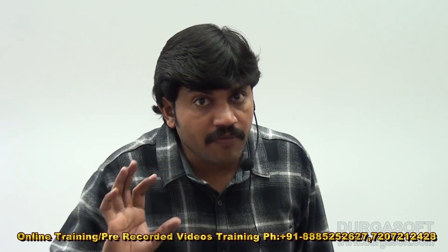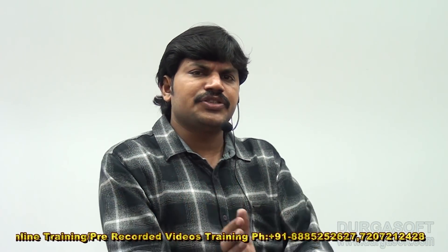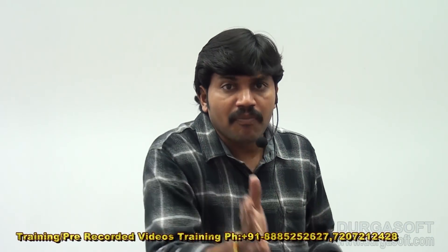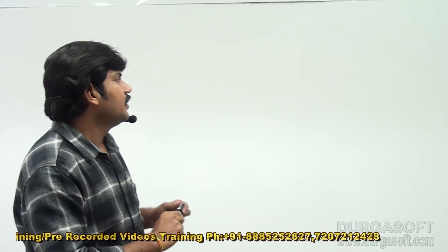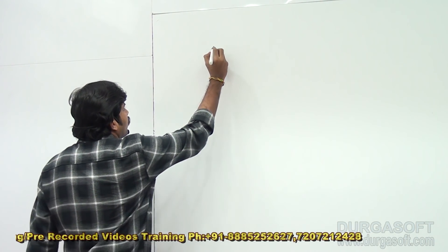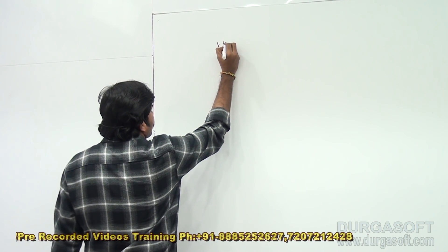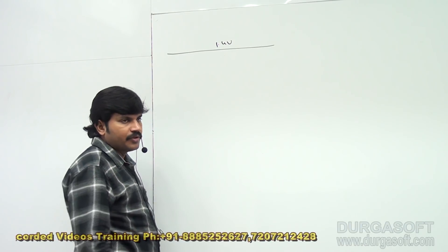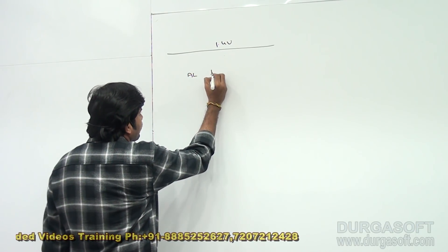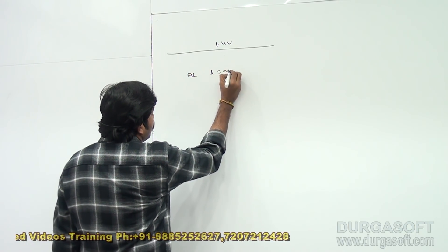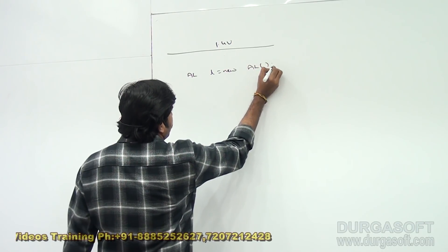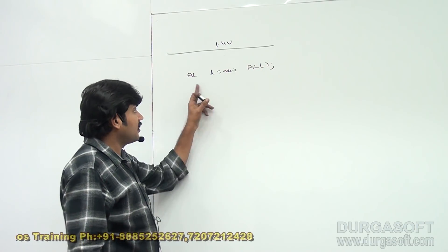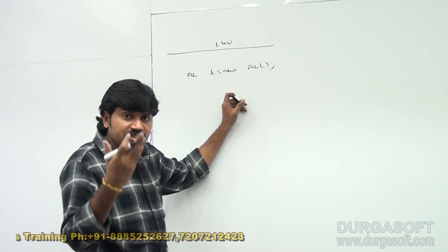I will explain how collections, generics, and the diamond operator evolved across multiple Java versions. Until Java 1.4, the generics concept was not there. If you wanted to create an ArrayList object, you would create it without any type parameter — generics simply did not exist.